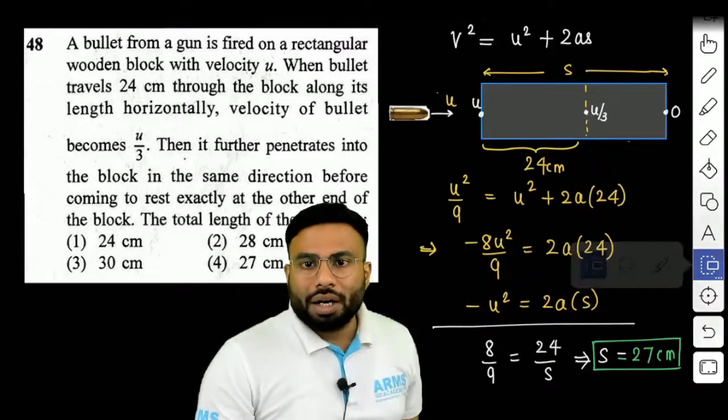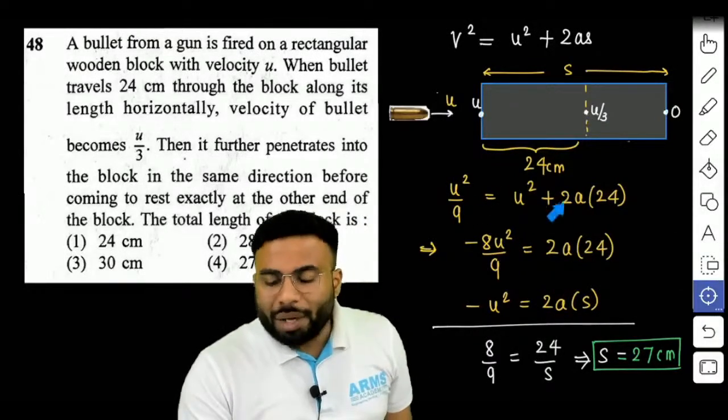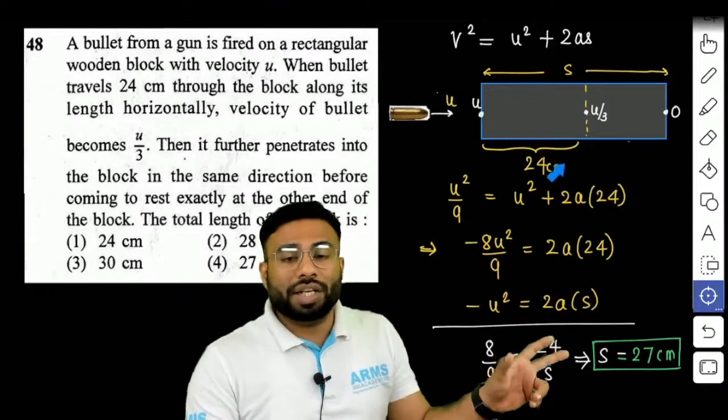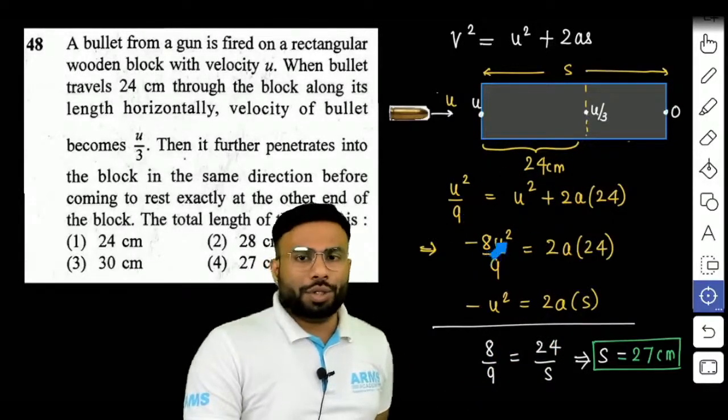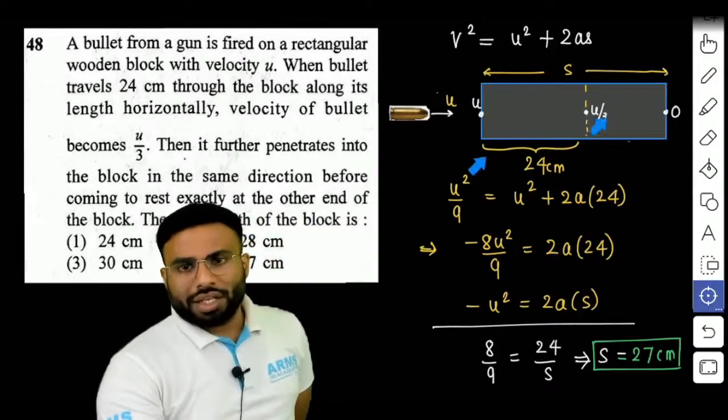तो पूरे के लिए हमारा final velocity कितना हो जाएगा. यह वाले पार्ट को जो पहले हमने निकाला for 24 centimeter, इसको हम U square को इधर लेके आजाए, तो यह हो जाएगा, minus 8 U square by 9 is equal to 2A 24